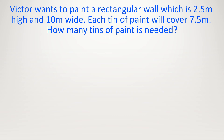Victor wants to paint a rectangular wall which is 2.5 meters high and 10 meters wide. Each tin of paint will cover an area of 7.5 meters squared. How many tins will she need to buy? In the question there is an area for the tin of paint, so let's just work out the area for the wall: 2.5 times 10 equals 25.